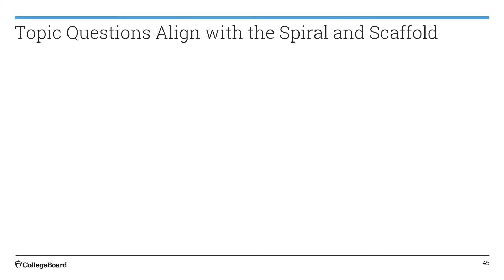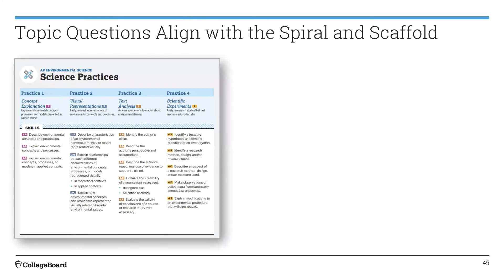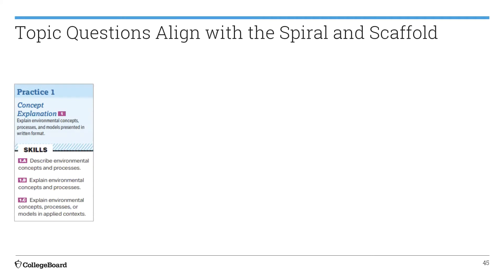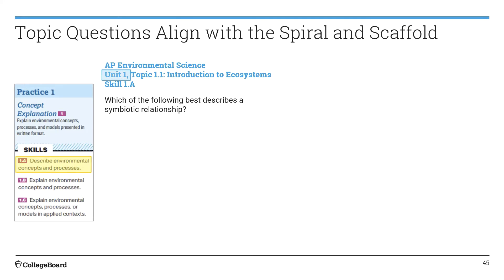We get a lot of questions about whether you have to teach the course in the order presented. Let me make a case for why that's a good practice. Skills repeat — that's the spiral — and are progressive throughout the course — that's the scaffold. If I look at environmental science and practice one, which is basically explaining concepts, I'll see how the skills progress: describe concepts and processes, explain processes and concepts, then explain those concepts in applied context. A student cannot do 1C unless they become adept at 1A and 1B. So looking at unit one, I'll see a question hooked to skill 1A.